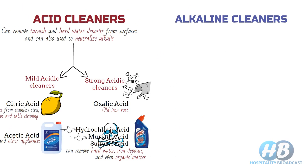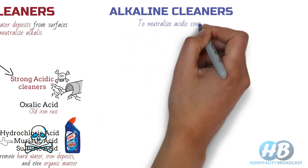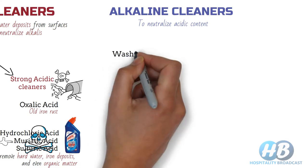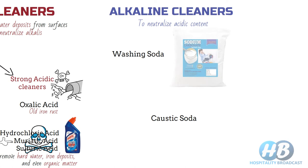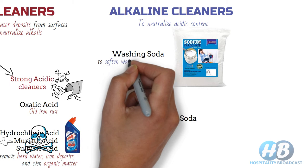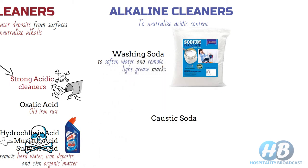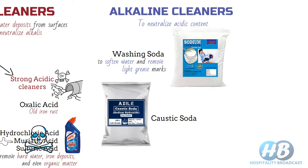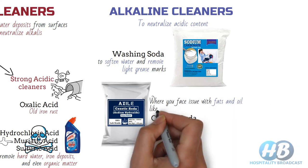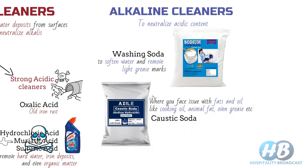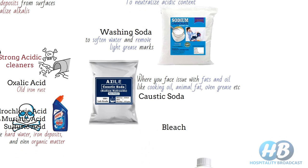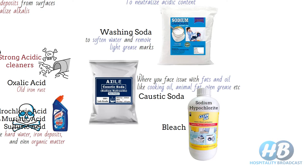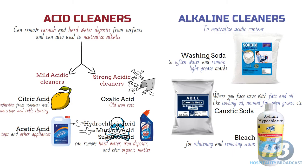Now let's come to alkaline cleaners. You can use these to neutralize any acidic content. Two of the most common examples are washing soda and caustic soda. Washing soda, scientifically known as sodium carbonate, is used to soften water and remove light grease marks, and is mostly used in washing machines. Caustic soda, also known as sodium hydroxide, is used for removing grease from grills and blocked drains — anywhere you face issues with fats and oils like cooking oil, animal fat, oven grease, etc. Another famous example of an alkaline cleaner is bleach, scientifically known as sodium hypochlorite, which is used for whitening and removing stains from soft and hard surfaces.